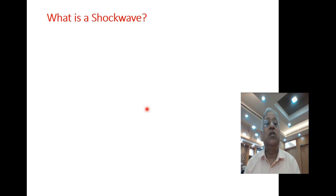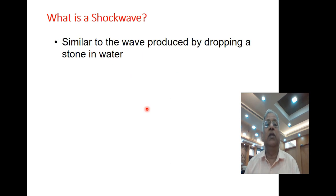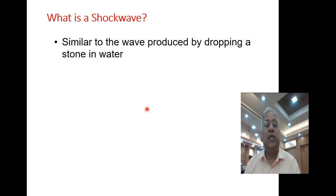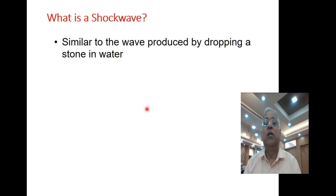What is a shockwave? A shockwave is similar to the wave produced by dropping a stone in water. When you drop a stone in water, it creates a disturbance and this disturbance travels in the form of waves. The same is the case with traffic flow. Whenever a disturbance is created in the flow, shockwaves are formed, and these shockwaves can move either in a forward direction or backward direction depending upon the nature of the disturbance and the flow condition.